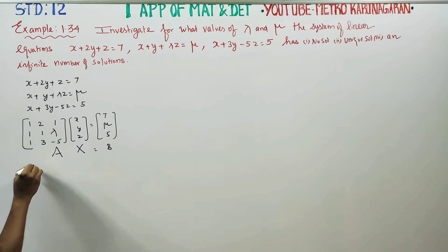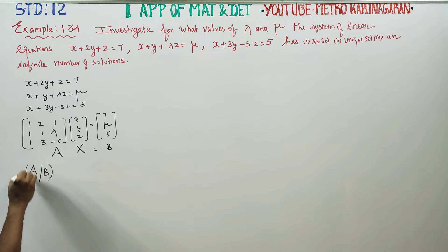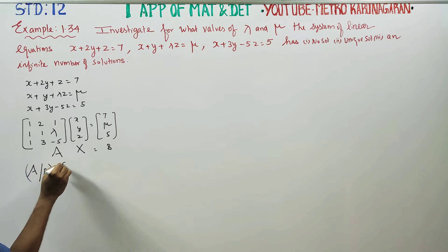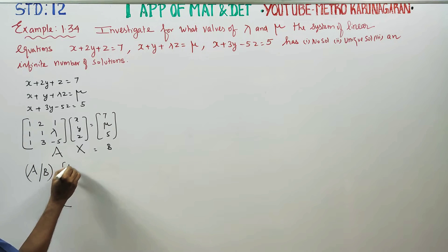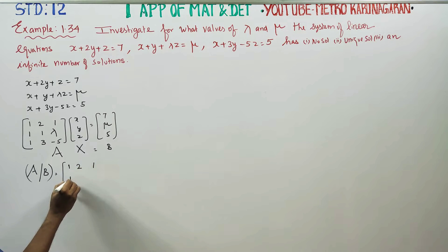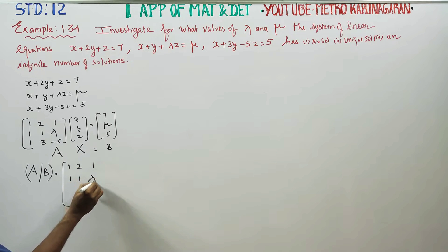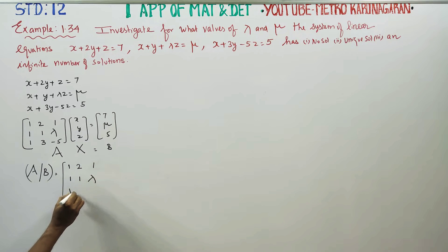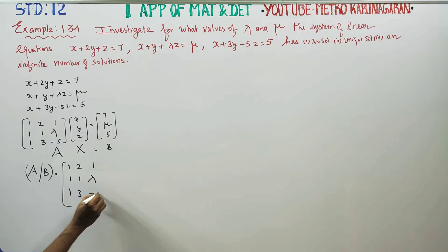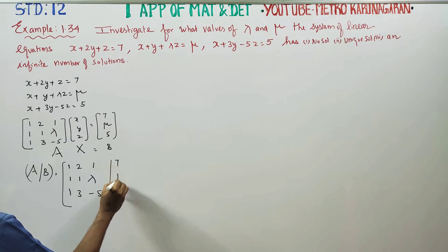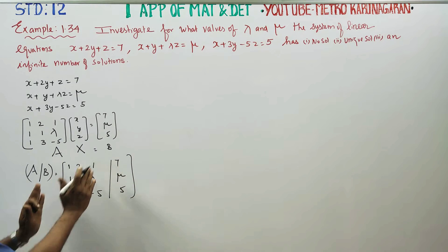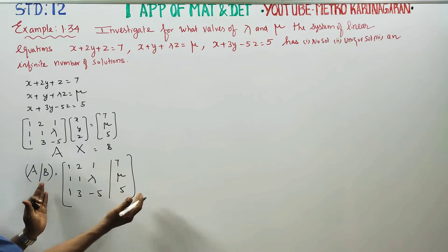First of all, I have to find the augmented matrix [A|b]. The augmented matrix is: 1, 2, 1 in the first row; 1, 1, lambda in the second row; 1, 3, minus 5 in the third row; followed by the constants 7, mu, 5. Now this is the augmented matrix.